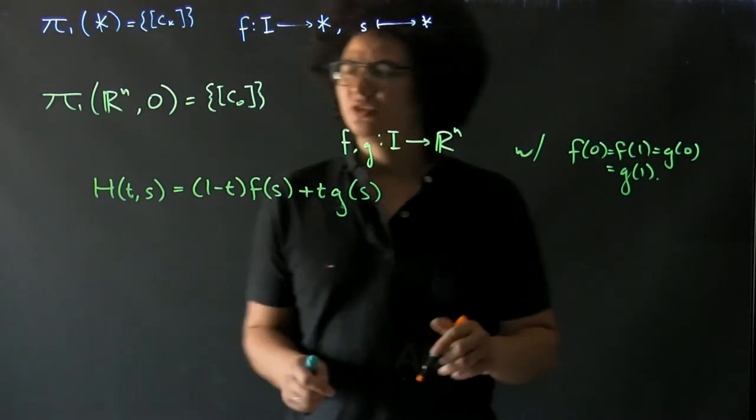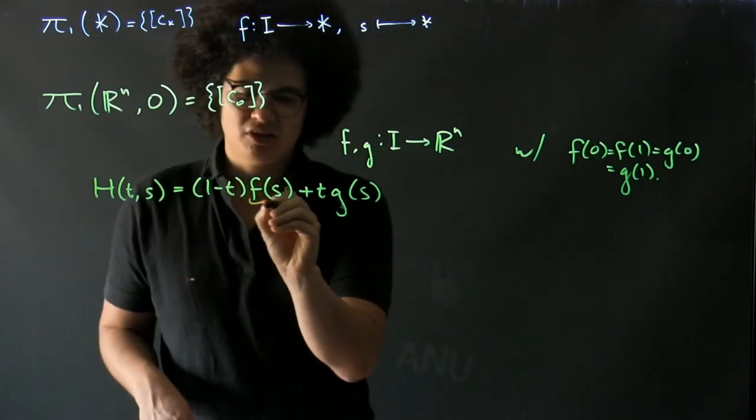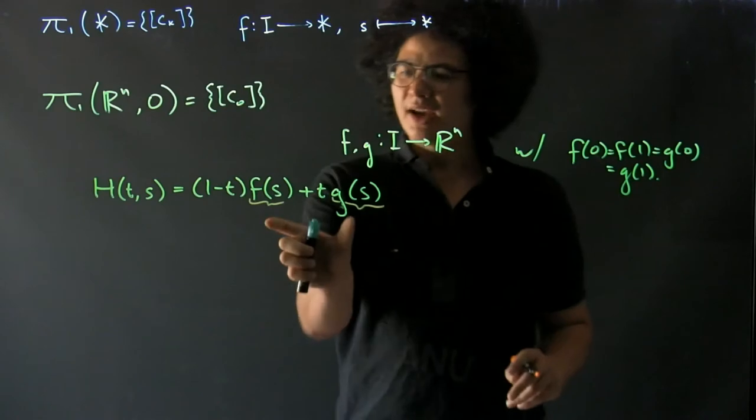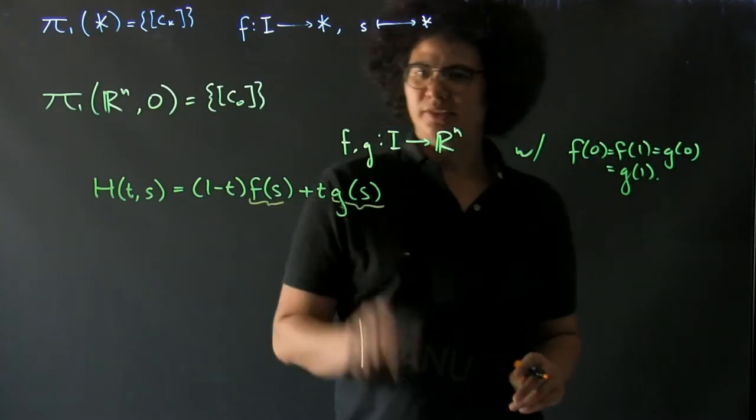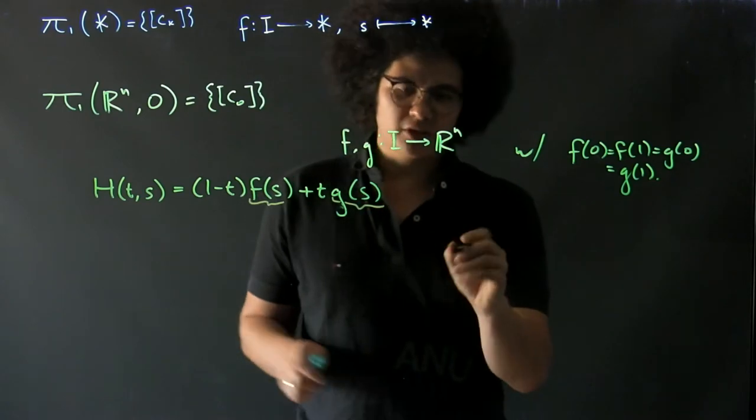This argument that I've used, that there's a linear homotopy, relies on the fact that R^n is convex. That is, any line between two points is contained in R^n. So let's see what can go wrong.